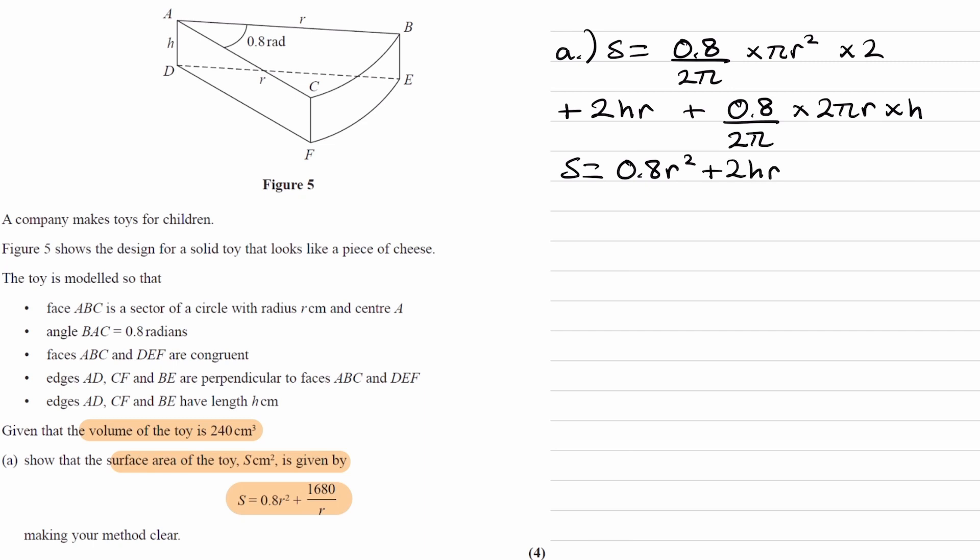The next term, nothing really to simplify there. The final term, again we have 2π on the top, 2π at the bottom, so this gives us 0.8rh.